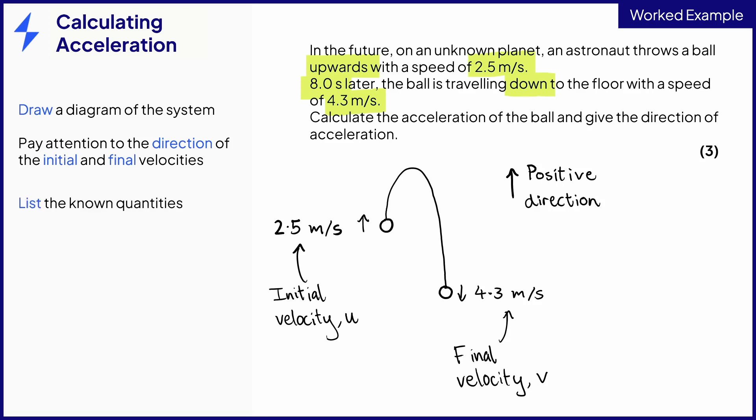Now when we list our quantities, initial velocity u is plus 2.5 meters per second, and final velocity is minus 4.3 meters per second. We'll also include our time of 8.0 seconds from the question.